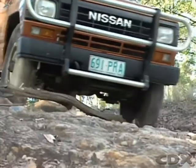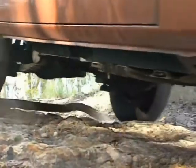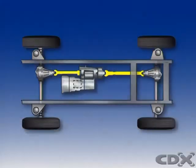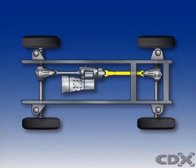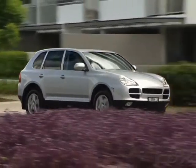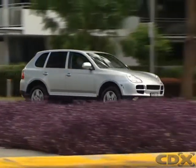Engaging the transfer case locks the propeller shafts together and directs torque through them to both axles. When disengaged, the transfer case is coupled to one propeller shaft only.